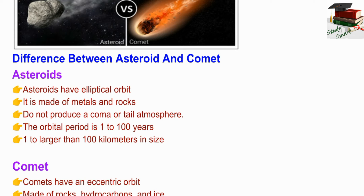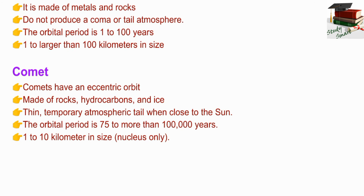Next question: what is the difference between asteroids and comets? Asteroids have elliptical orbits, are made of metal and rock, do not produce a coma or tail, have an orbital period of one to one hundred years, and can be up to 100 kilometers in size. Comets have an eccentric orbit, are made of rock, hydrocarbons, and ice, and have a thin temporary atmospheric tail when close to the sun.